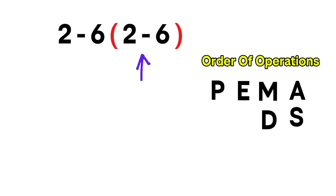And we have a multiplication, because whenever a number touches a parentheses, it automatically means multiplication, even if the multiplication sign isn't shown.